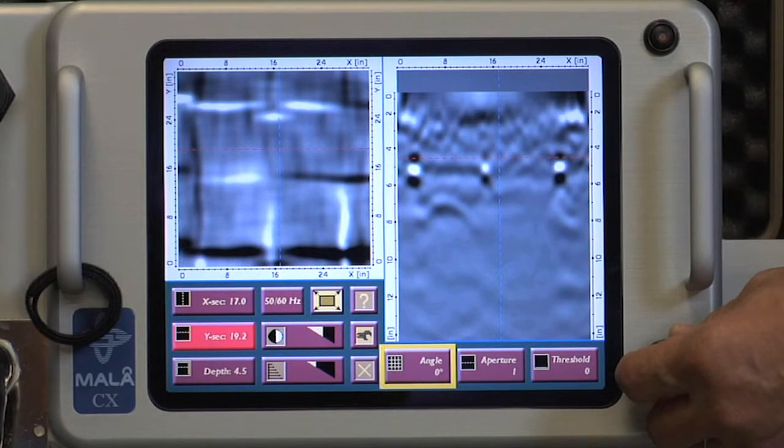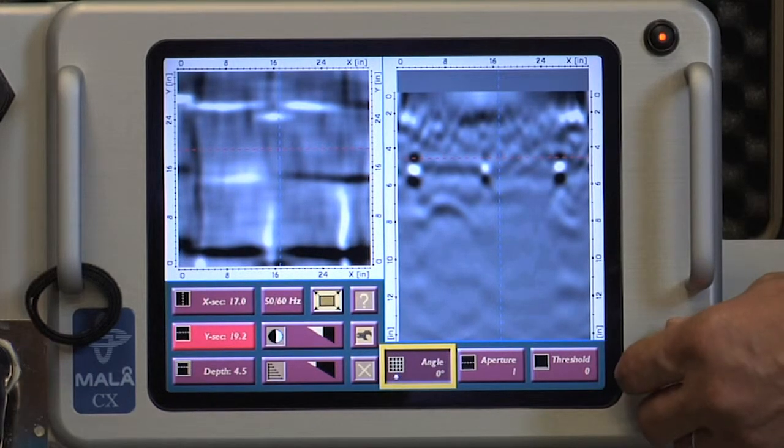Angle: This feature corrects the 3D image for grids accidentally performed off-angle or not parallel or perpendicular to the actual rebar mat. For example, if the grid mat lies 30 degrees to the actual rebar alignment, the 3D image will be distorted.